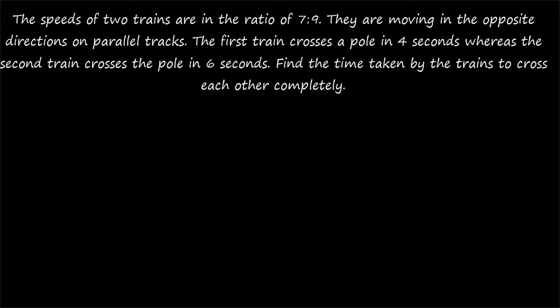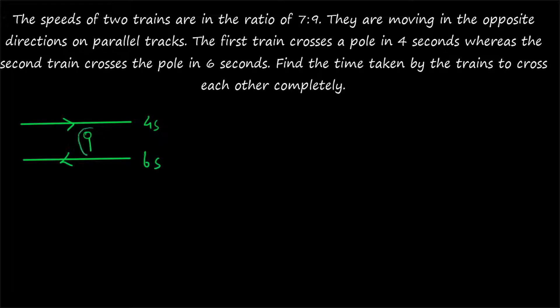So what's the given question? There are two trains and the speeds of the trains are in the ratio of 7 is to 9. They are moving in opposite directions — one train moving this way and the second train moving the other way — and there is a pole somewhere in between. The first train crosses the pole in 4 seconds and the second train crosses the same pole in 6 seconds.